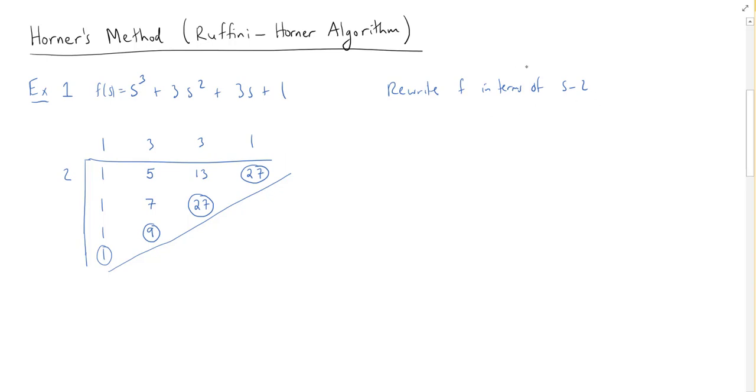And then finally this last position I do 2×13 + 1, so 2×13 + 1, which is also 27. Just for completeness I'll circle this one. So the circled numbers are going to give us the coefficients for f in terms of s - 2. So this f(s) which we've written up above just in terms of s, we can now write as (s - 2)³ + 9(s - 2)² + 27(s - 2) + 27, and if you don't believe it of course you can verify by distributing.